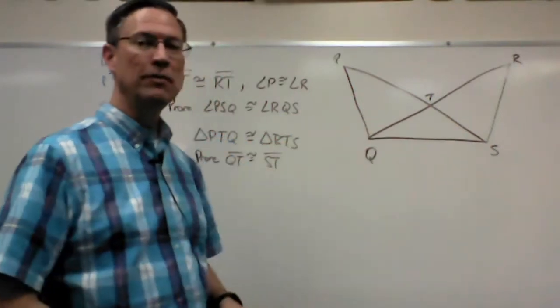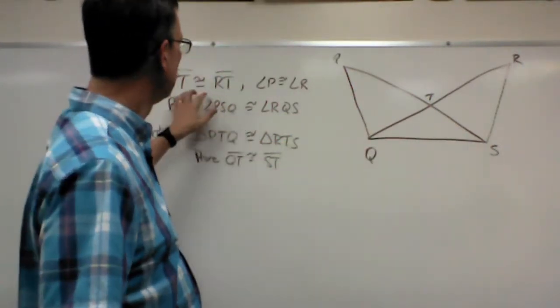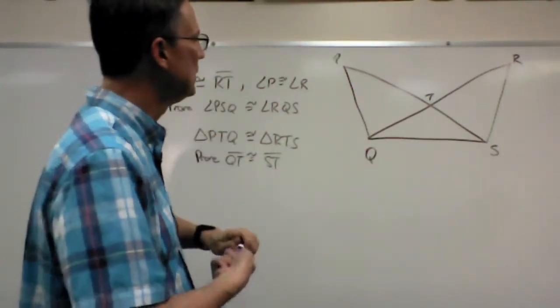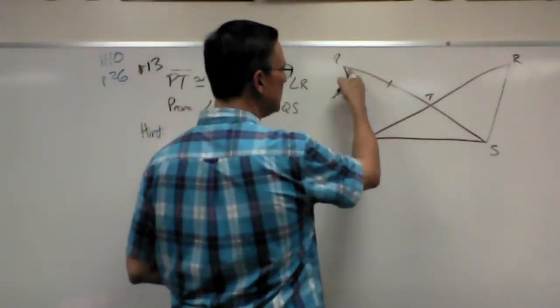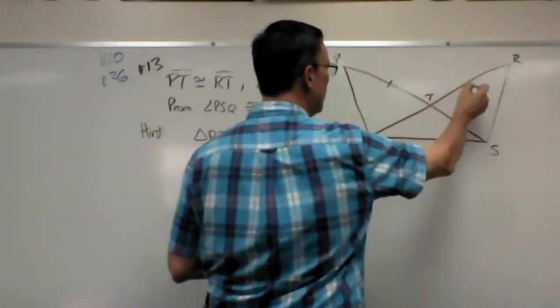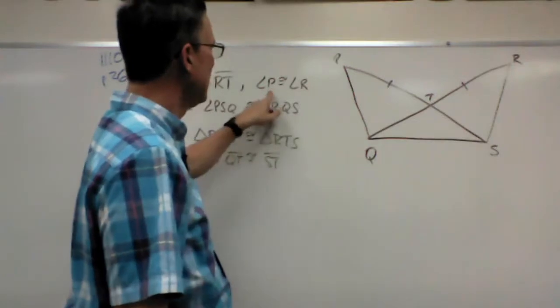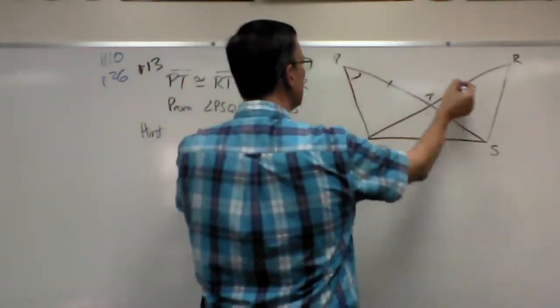So we have the sketch. First thing is let's mark what they tell us is congruent, so PT—so that's just this segment here is congruent to RT, and then angle P is congruent to angle R.